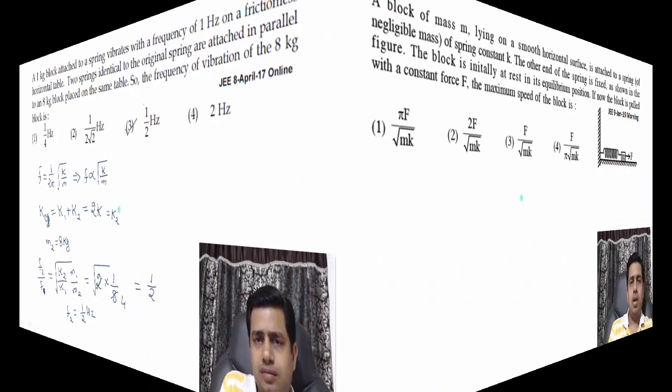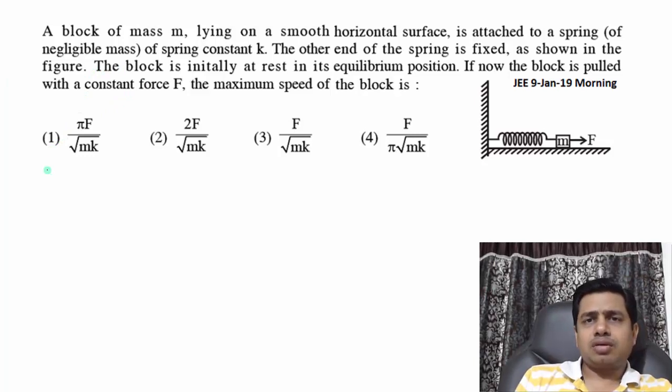The question is: a block of mass m lying on a horizontal smooth surface is attached to a spring of spring constant k. The other end of the spring is fixed as shown in the figure. The block is initially at rest in its equilibrium position. If now the block is pulled with a constant force F, the maximum speed of the block is? When a spring-mass system has a constant force applied, it will do SHM. Any particle or object either moves linearly in a straight line, and there's spring force or any force that depends on distance or displacement, and there's constant force.